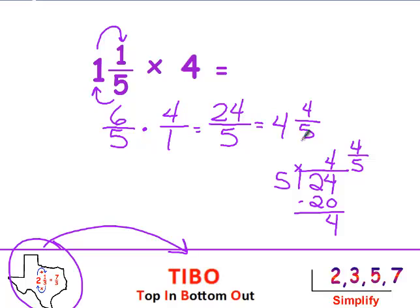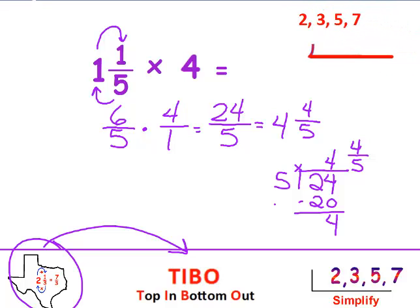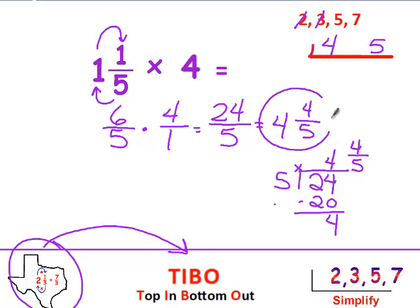But before I accept any answer as being final, I need to see if I can simplify it using the magic numbers in the upside-down staircase. I'm going to put 4, the numerator first, and then 5. Let's try against 2 — are they both even? Nope, don't use 2. If I sing the 3 song, do I hit 4? Nope, I don't. 5 and 7 are both bigger than 4, so I know this is already simplified.